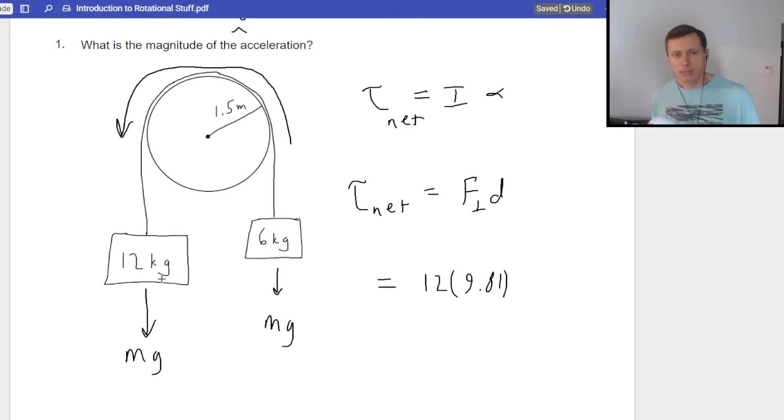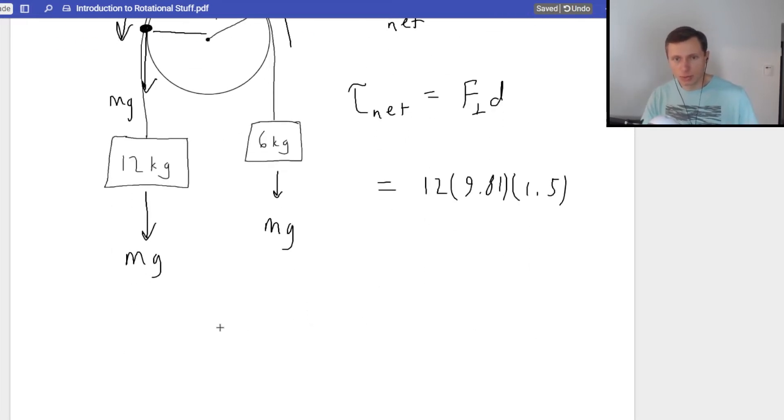And now that distance, think of it like this. Even though the mass is way down here, it's essentially coming into contact with the wheel at that point right there. There's where our force mg really is acting on the wheel. And that distance from the center is 1.5 meters, so times 1.5. I need more room. I'll write it down here. 12 times 9.81 times 1.5.